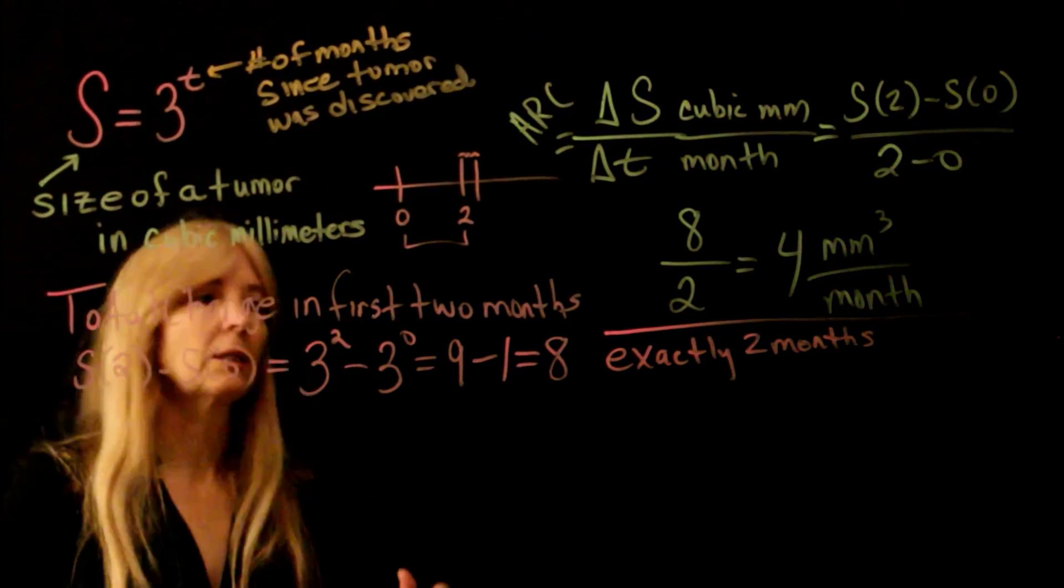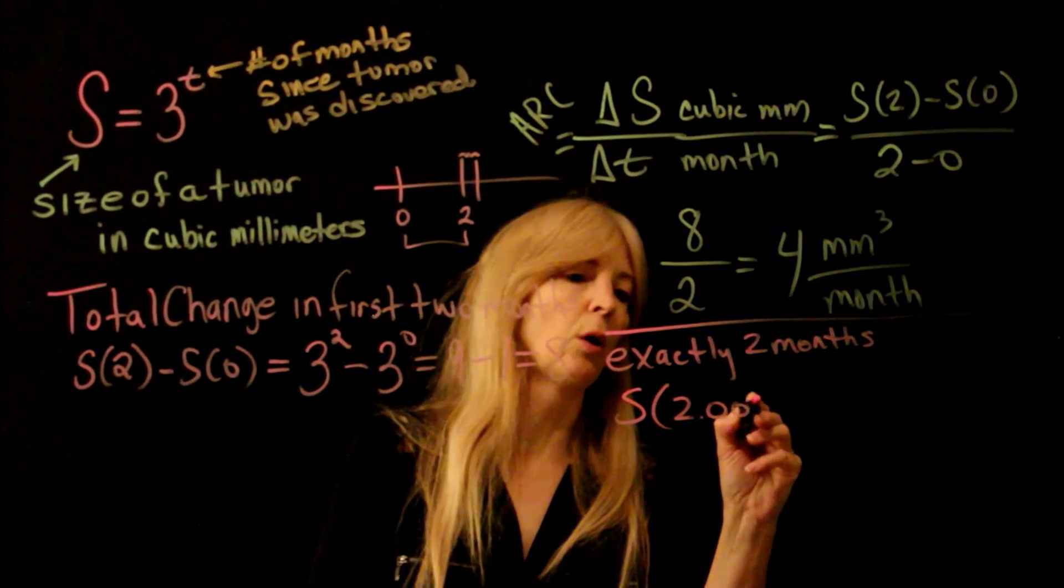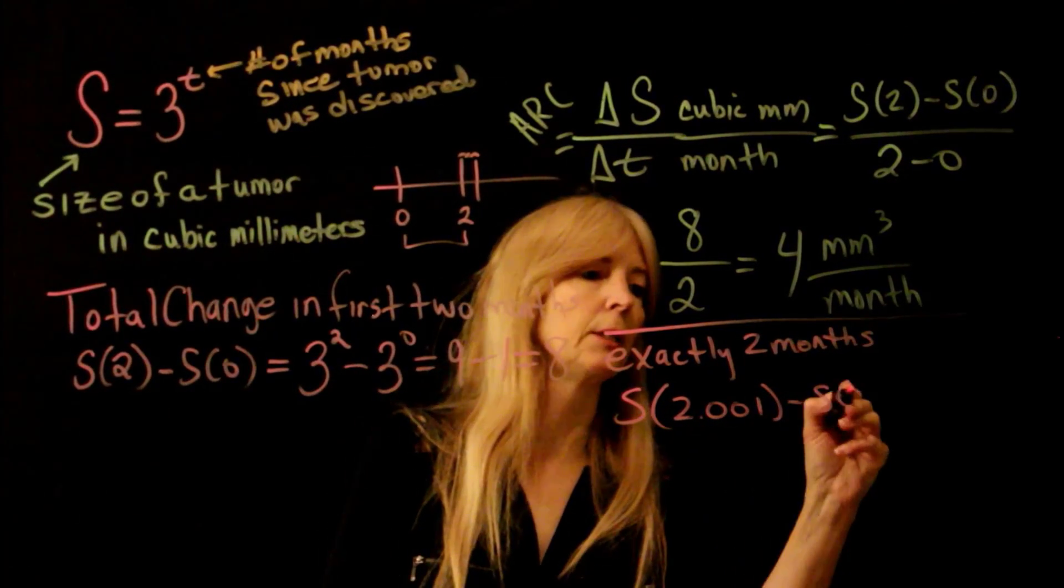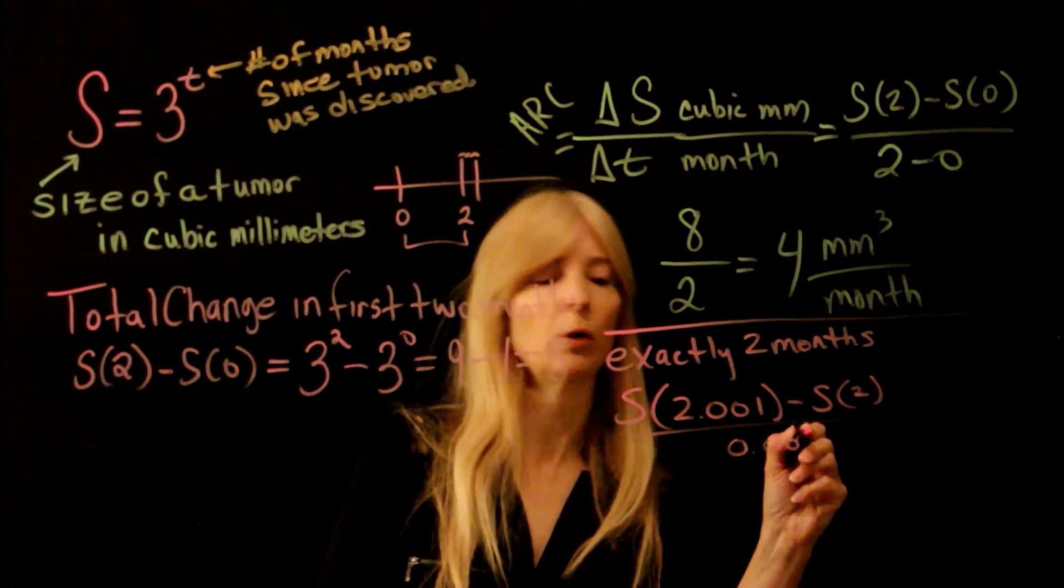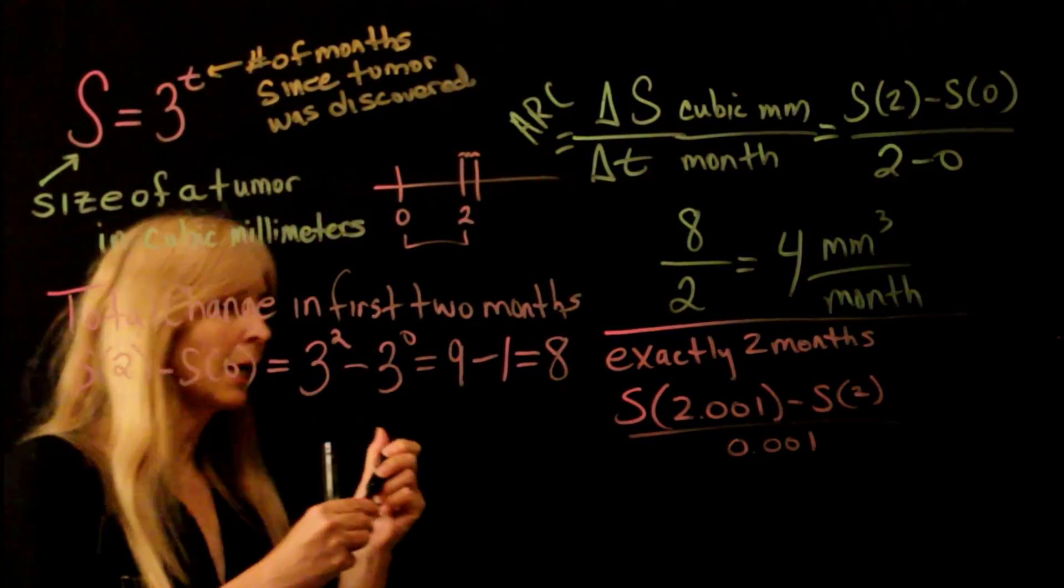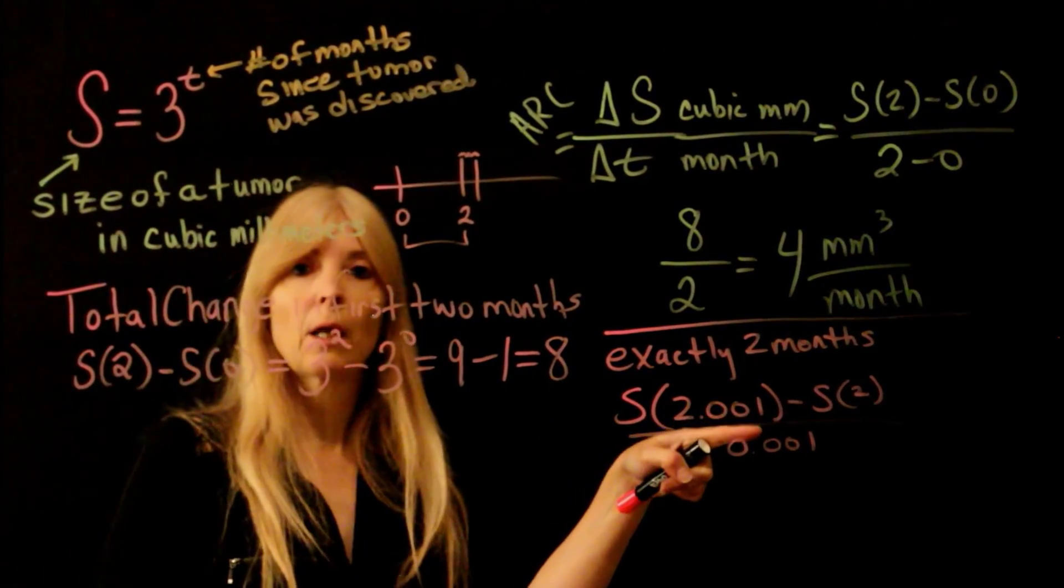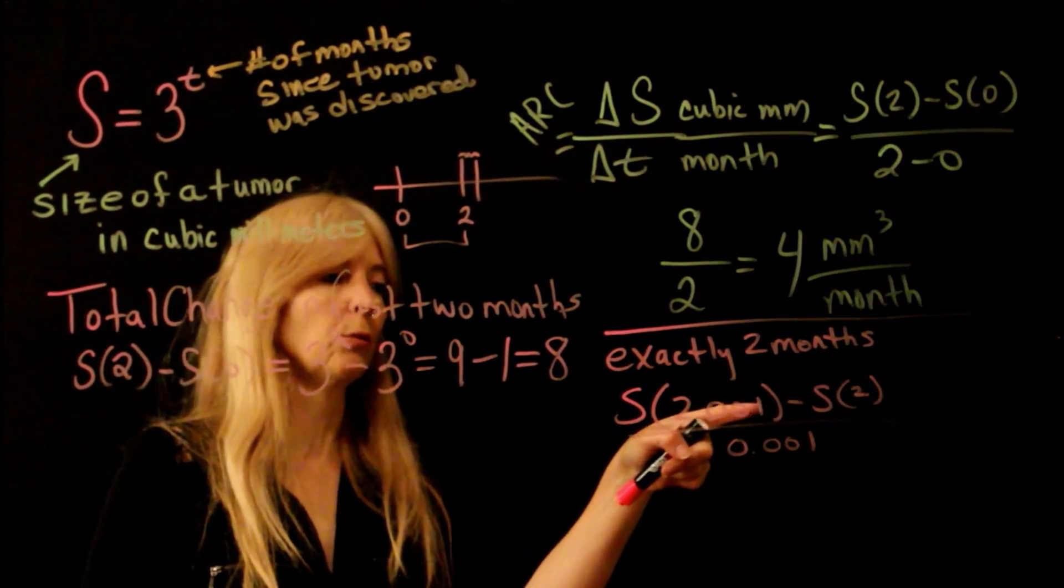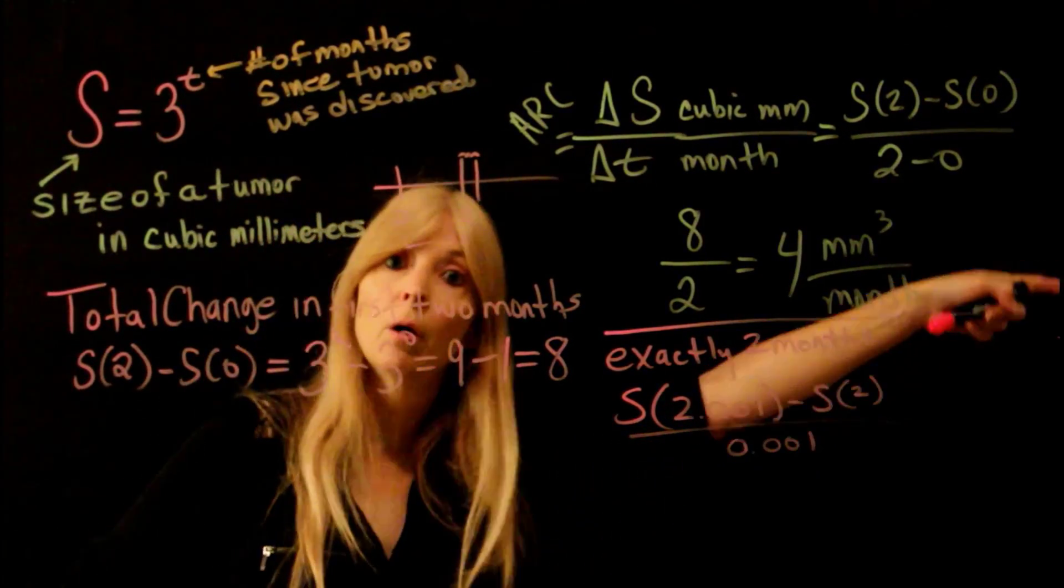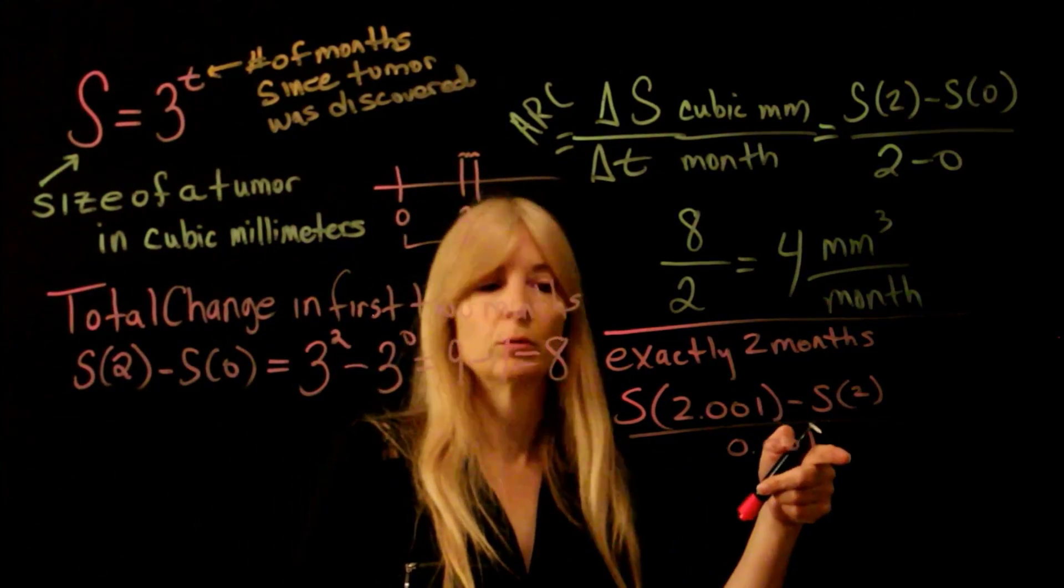And so what I'm going to do is I'm going to pick 2.001 and then 2. And then of course, the H is 0.001. So you might say, well, where'd you get that number from? That's just something really, really close to 2. You could put 2.01, you could put 2.00000001. I just need something very, very close to 2.